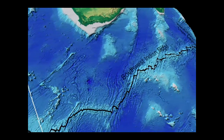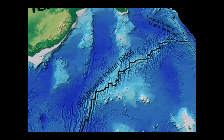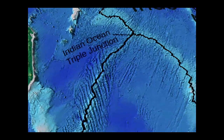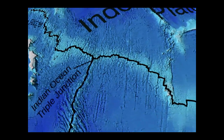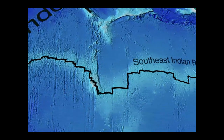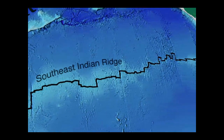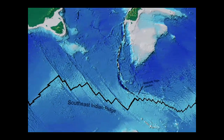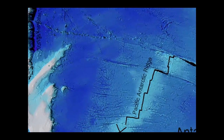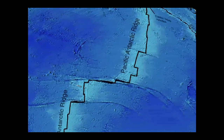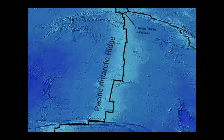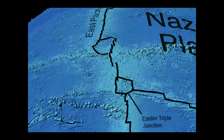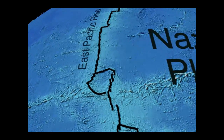Heading south of Africa we see the Southwest Indian Ridge where extension and spreading are occurring. Then we see the Southeast Indian Ridge along the southern edge of the Indian plate, and a ridge separating the Pacific and Antarctic plates. These ridges are zones of extension with transform faults separating them along strike — we'll talk about transform faults in the next lecture.